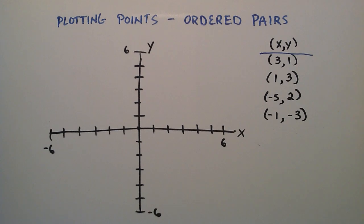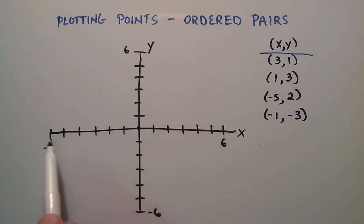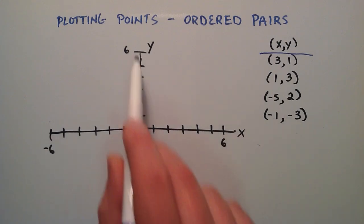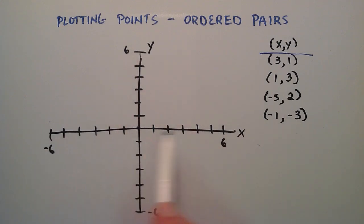Hey everybody, this is Paul. Welcome to lesson 56 in the Intermediate Algebra Series. In this tutorial I'm going to do some more examples on how to plot points or ordered pairs on a XY coordinate system. I've got the XY coordinate system laid out here just like I showed you guys in the last tutorial.